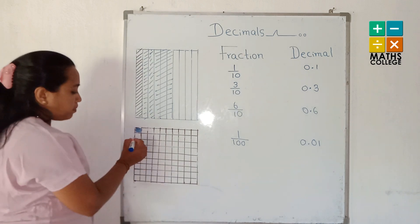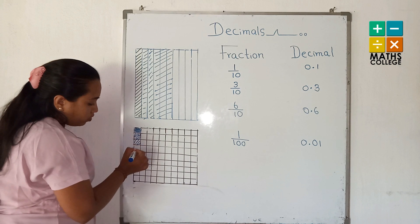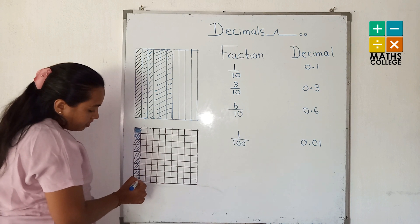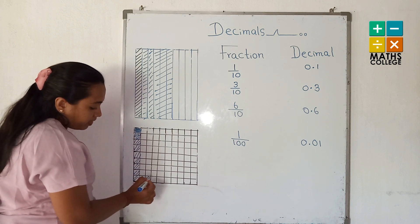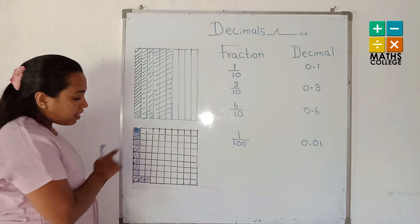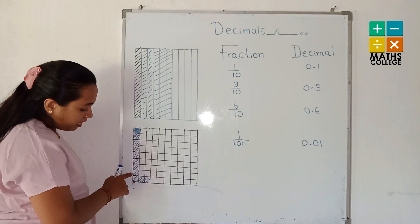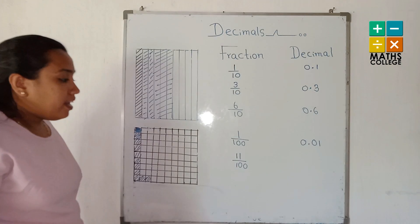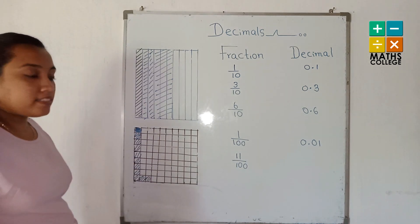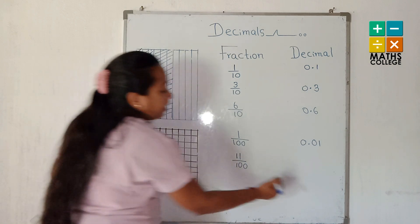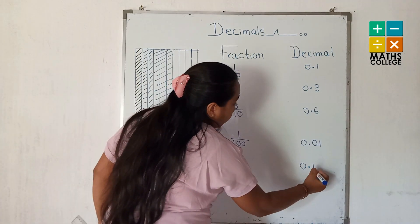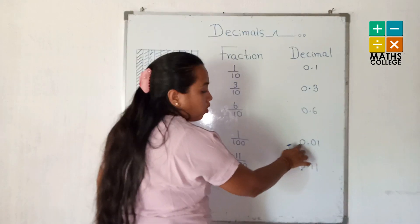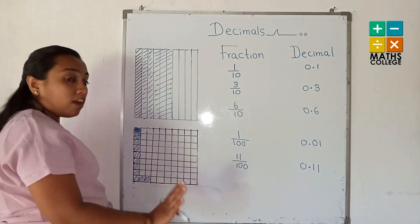Another example: I will color eleven parts in this figure. How many colored parts? Eleven. Eleven upon one hundred. How do we write this? There are two numbers, so they go into two decimal places. 0.11 is the correct method — not 0.01. 0.11.